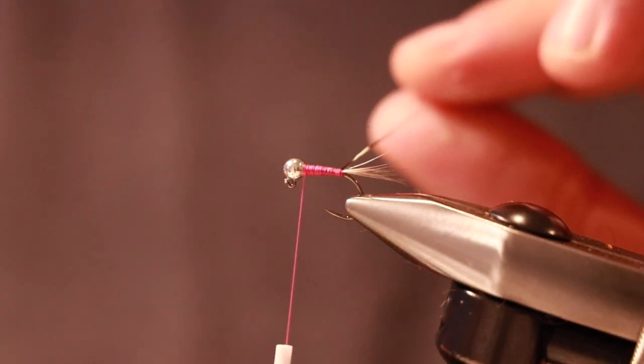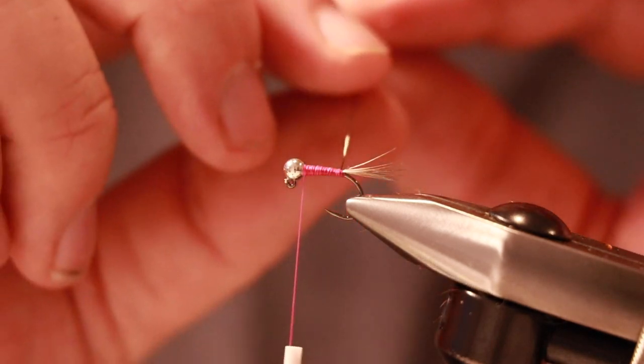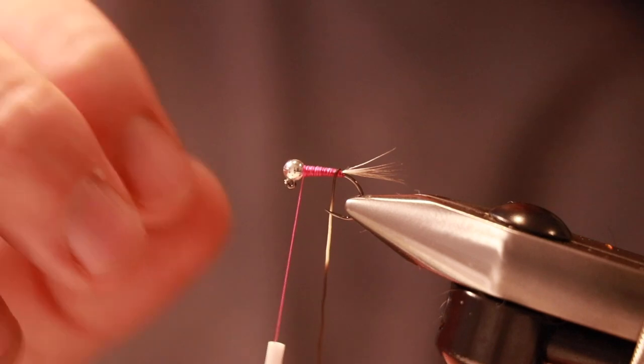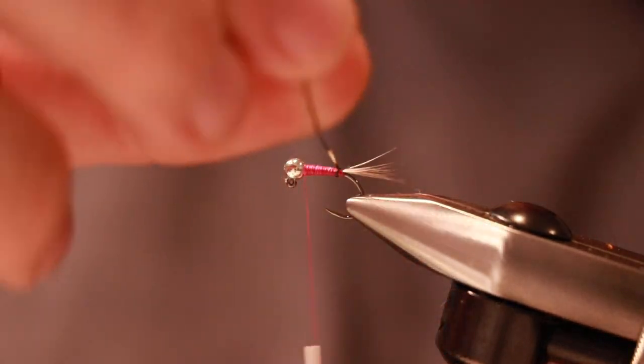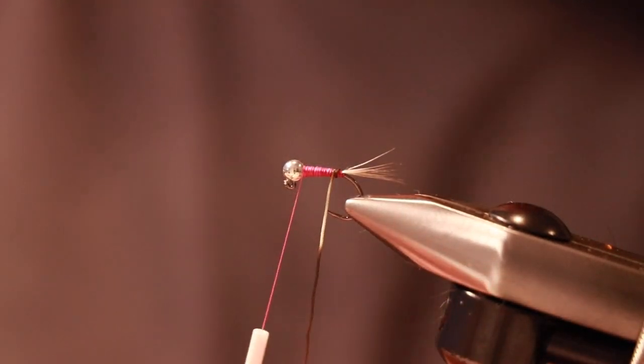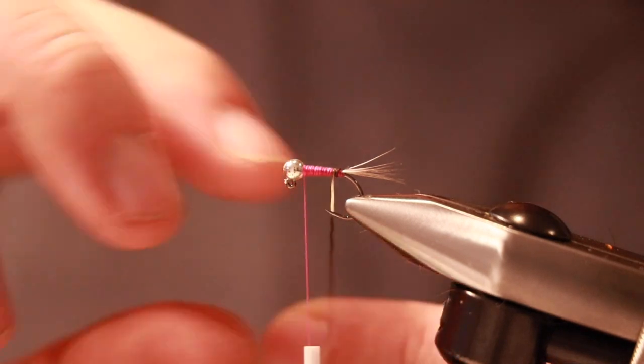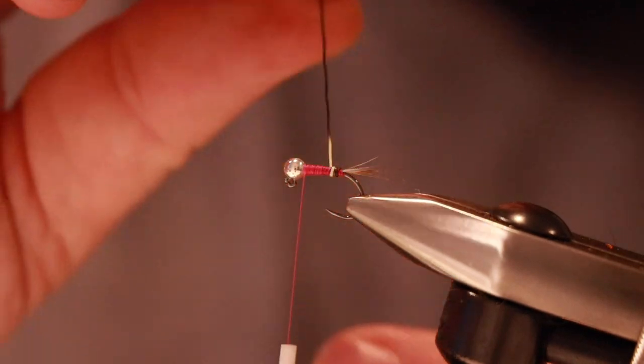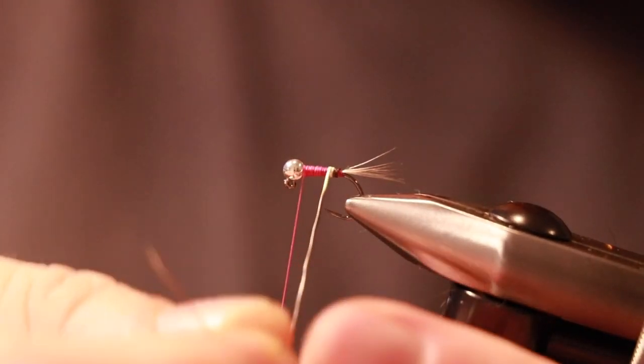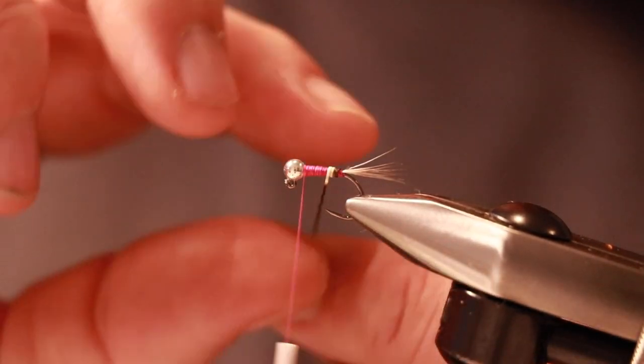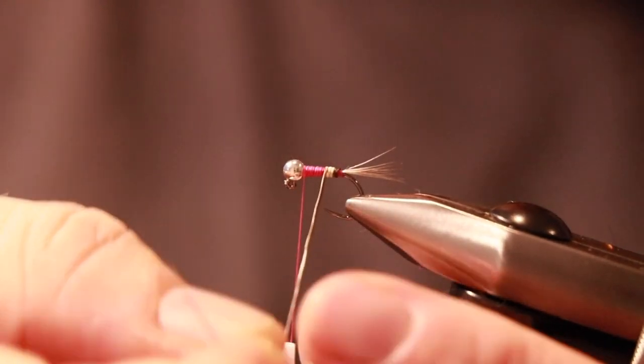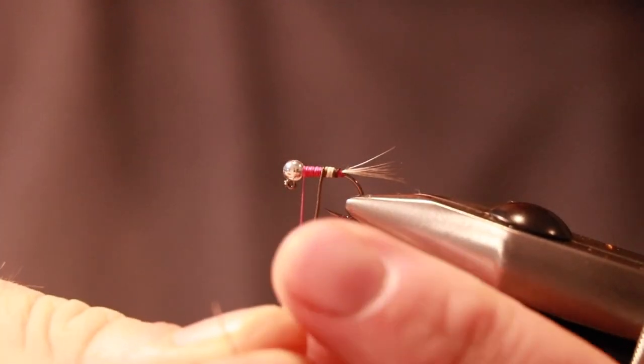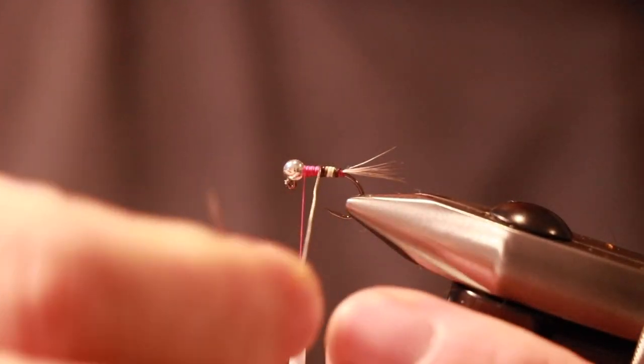Now what you want to do is, you can use your hackle pliers. I don't find I need it because they're generally quite long. And you just want to bring it up in touching turns. Watch your hook point. Occasionally they do split. If that's the case just go back and get a new quill. So hopefully you can see that now you're starting to get the different shades. It's three turns of the white and we're into a darker color now.